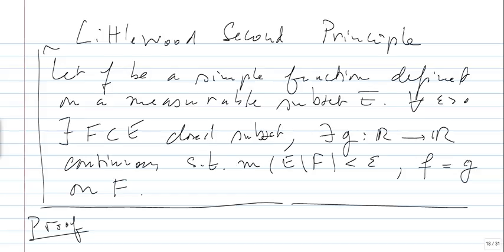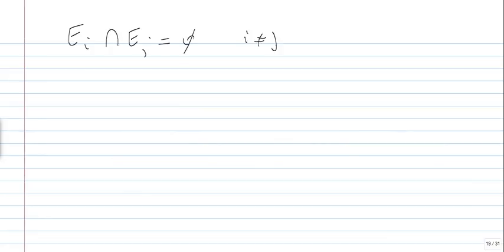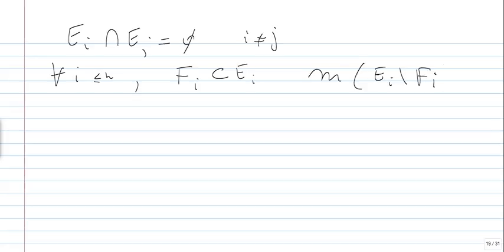For the proof: F is a simple function, so F equals the sum of A_i times the characteristic function of E_i, a finite sum, where the A_i's are distinct, implying the E_i's are disjoint. For every E_i, we pick a closed subset F_i such that the measure of E_i minus F_i is less than epsilon over (N+1).